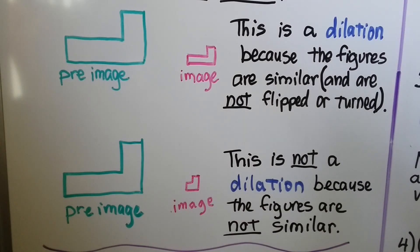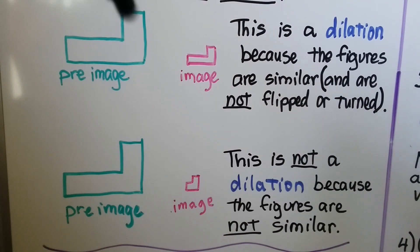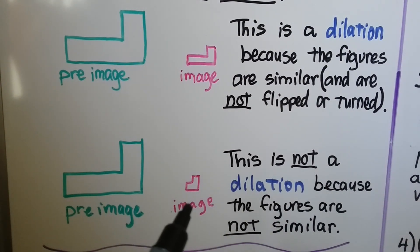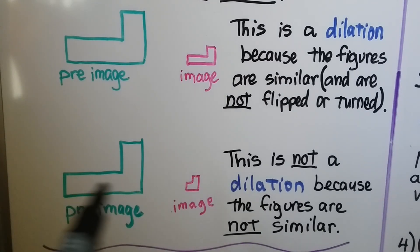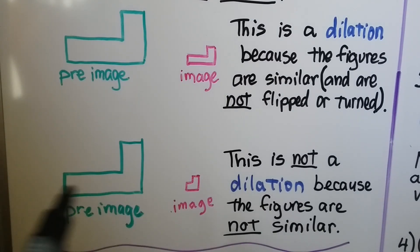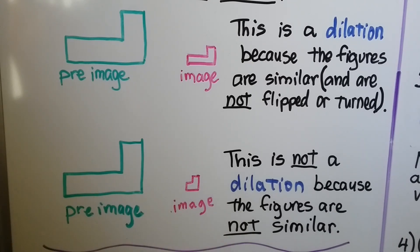They're not flipped or turned, so it's only a dilation — no rotation with a dilation. For this next example, here's the pre-image and here's the image. This is not a dilation because the figures are not similar. This one has a long part coming out on the left side that the other doesn't, so they are not similar.